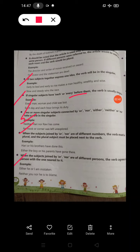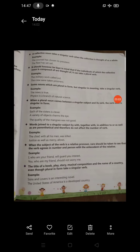When the subjects joined by or nor are of different persons, the verb agrees in person with the one nearest to it. For example, either he or I am mistaken. Neither you nor she is to blame.